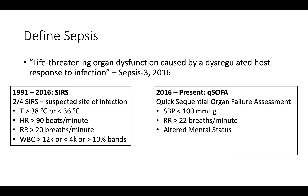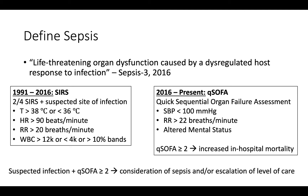As discussed in previous sessions, tachypnea and respiratory alkalosis are often the body's compensatory response to the worsening metabolic acidosis in sepsis or septic shock. One point is given for each variable present. Scores greater than or equal to 2 are predictive of worsened outcomes and increased in-hospital mortality. In a patient with either a known or suspected infection, 2 out of 3 qSOFA variables should prompt consideration of sepsis and escalation of care to the ICU. Note that the term severe sepsis has largely fallen out of favor.